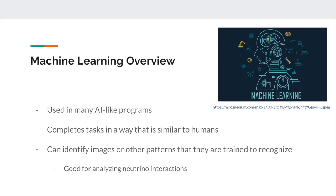The images that I used for this project were generated by machine learning to visualize data from a piece of technology called the liquid argon time projection chamber, or LAR-TPC. These chambers use liquid argon to help see neutrino interactions easier since they can be very hard to detect. The images are taken using a series of wires, and then in reconstruction, these 2D images are compiled together to create one 3D image of the interactions.